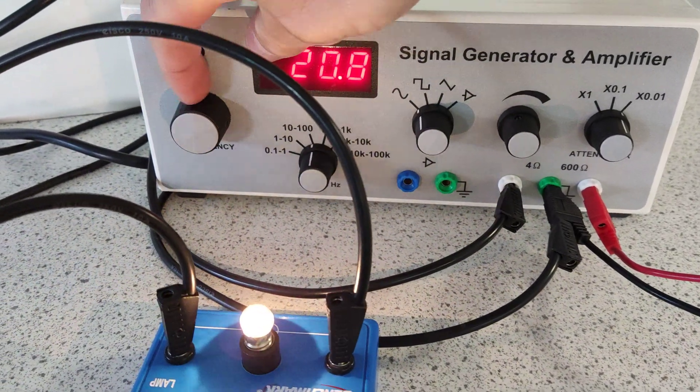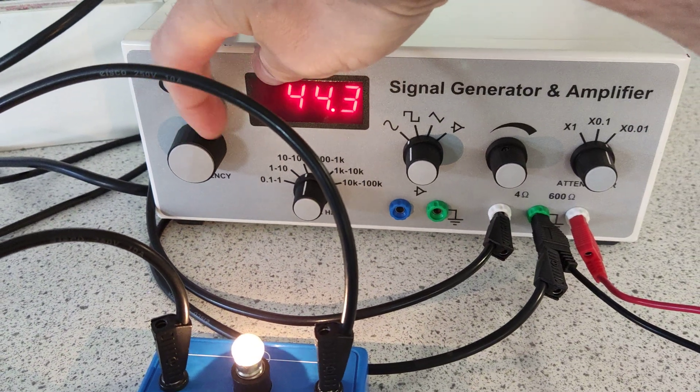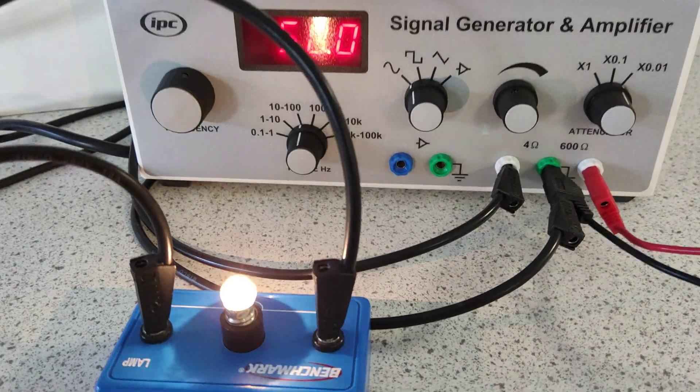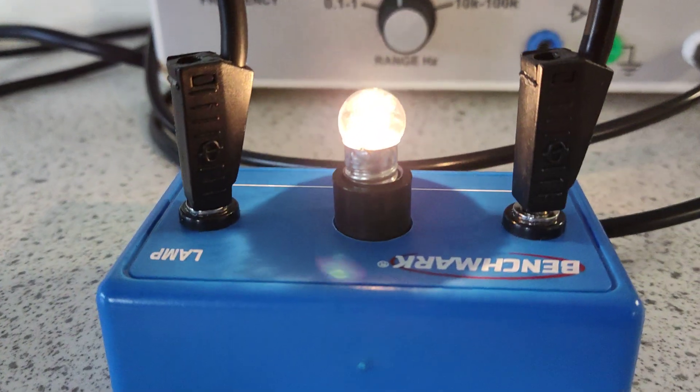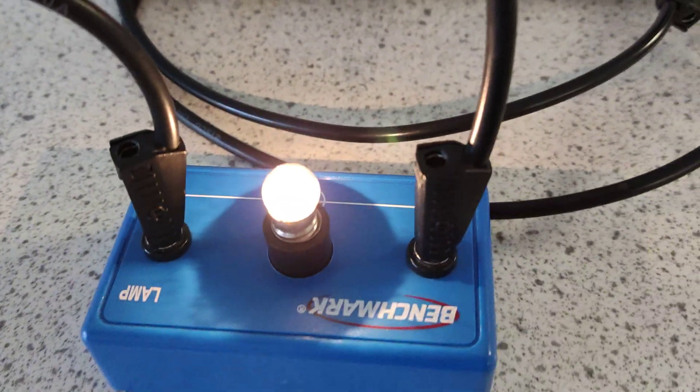Now if I get it up to here, that is mains frequency, 50 Hertz. I think the light bulb there looks pretty steady, doesn't it? There's a little bit of a flicker at 50 Hertz.